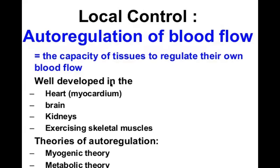This autoregulatory mechanism — the local autoregulatory mechanism — is very well developed in some tissues like the heart, brain, kidney, and skeletal muscles. This autoregulation for blood flow is guided by two main theories: myogenic theory and metabolic theory. Metabolic theory we have already seen.